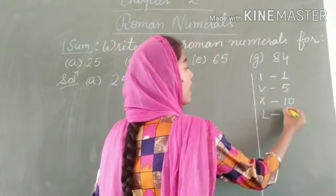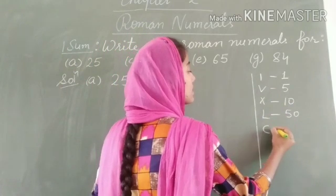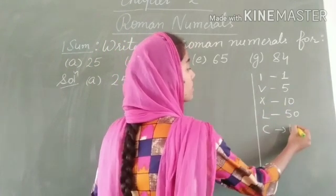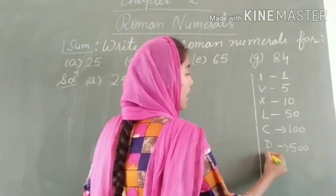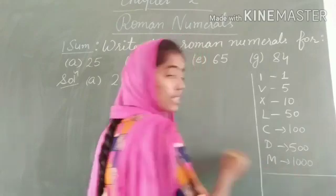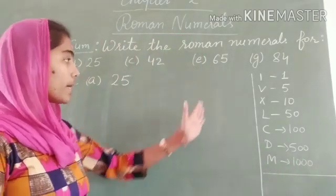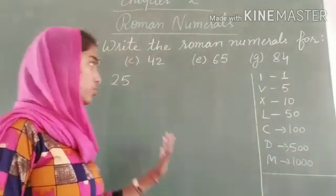then L stands for 50, C stands for 100, D stands for 500, and M stands for 1000. So these are the 7 letters you have to keep in mind along with their values.